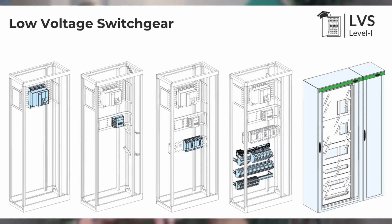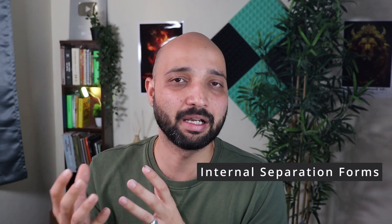There are different components used in low voltage switchgear — air circuit breakers, MCBs, MCCBs, and busbars running through the switchgear. With the help of physical barriers, such as insulating or plastic material, we separate each compartment — the busbars, circuit breakers, and MCBs. Those barriers are the internal separation forms, and their technical standard name is internal separation forms.